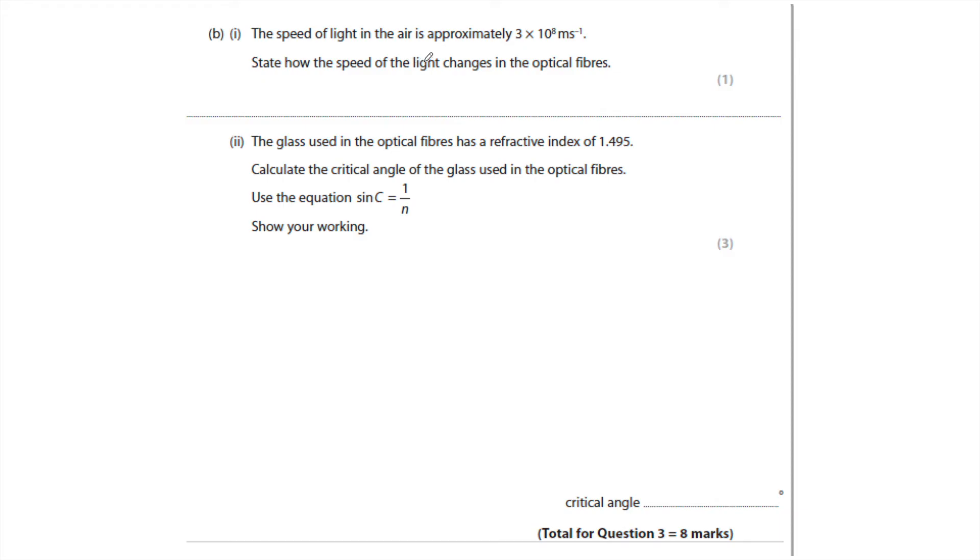The speed of light in air is approximately three times ten to the eight. State how the speed of light changes in optical fibers. Well, of course you can't go faster than the speed of light. The speed of light decreases.